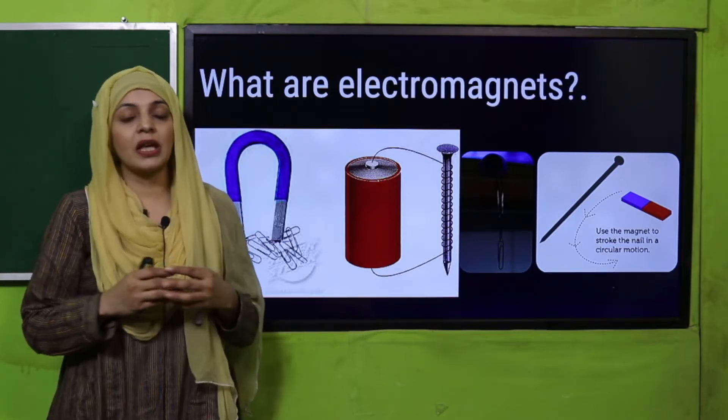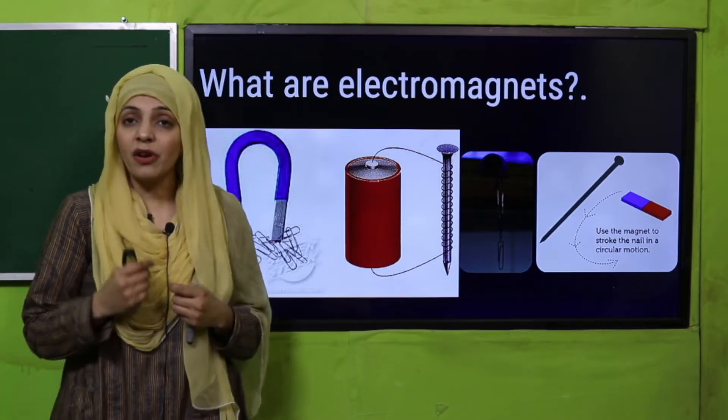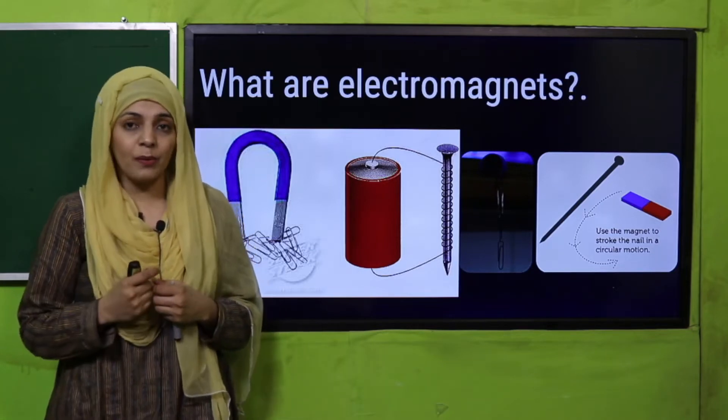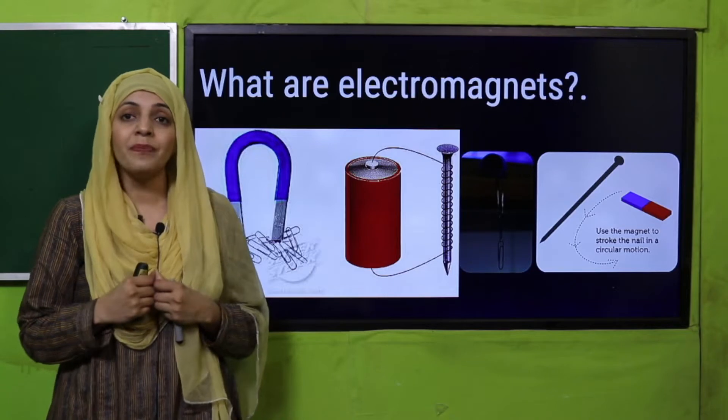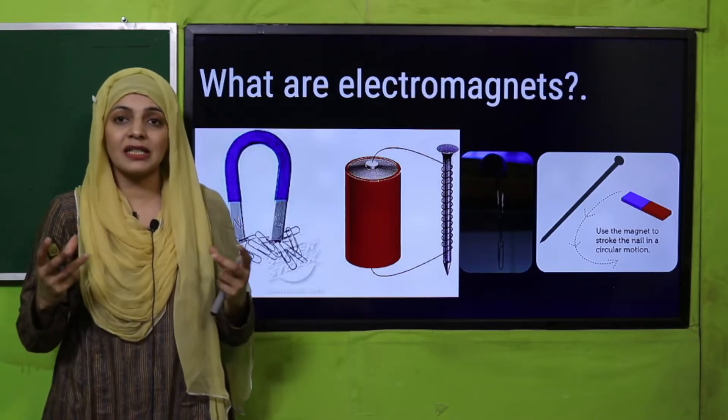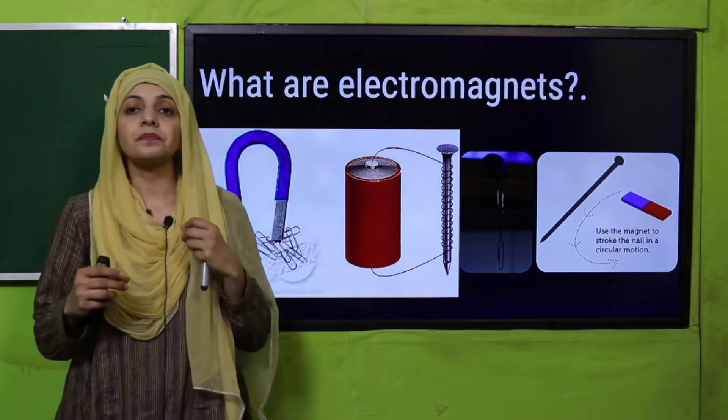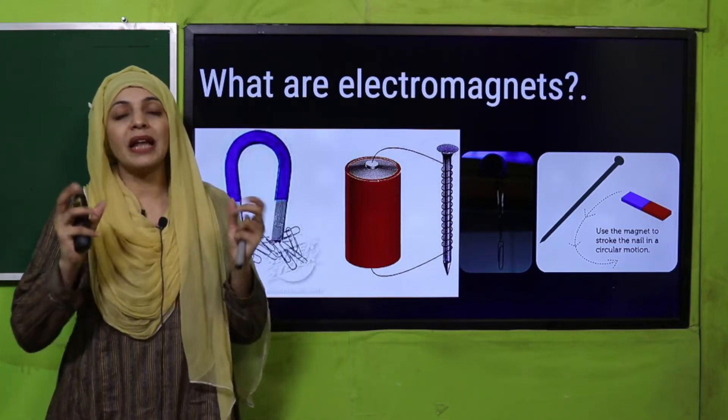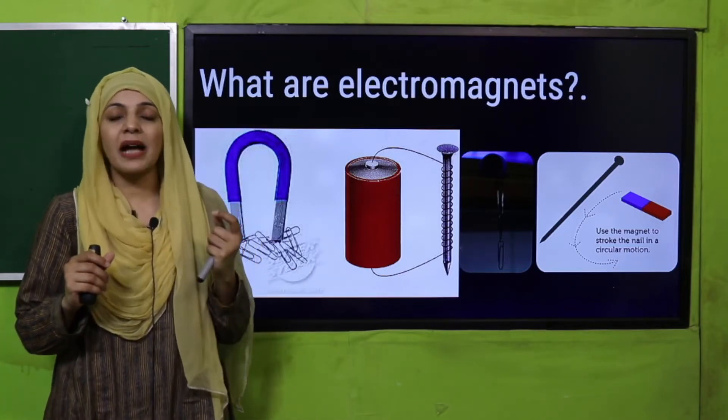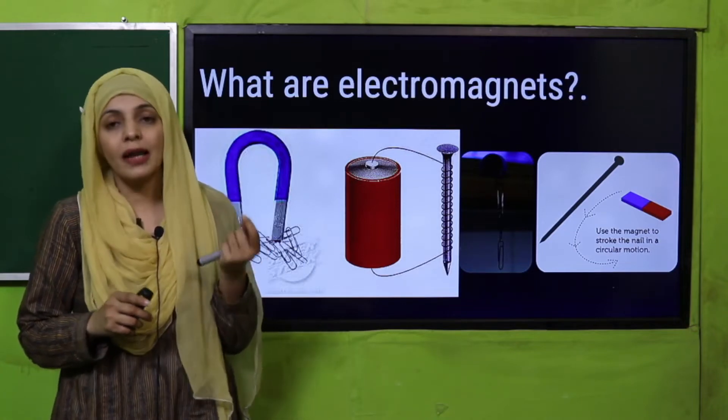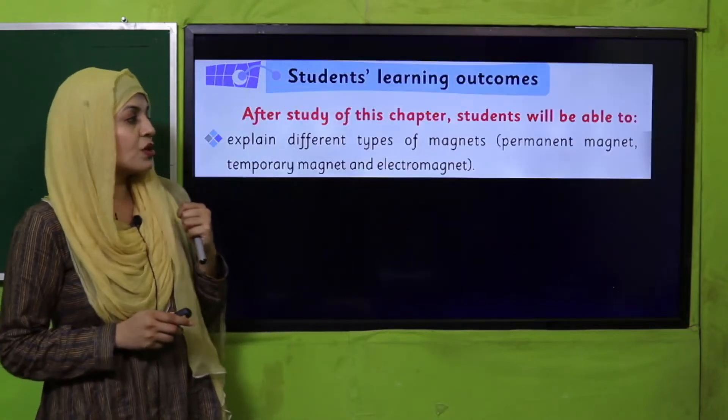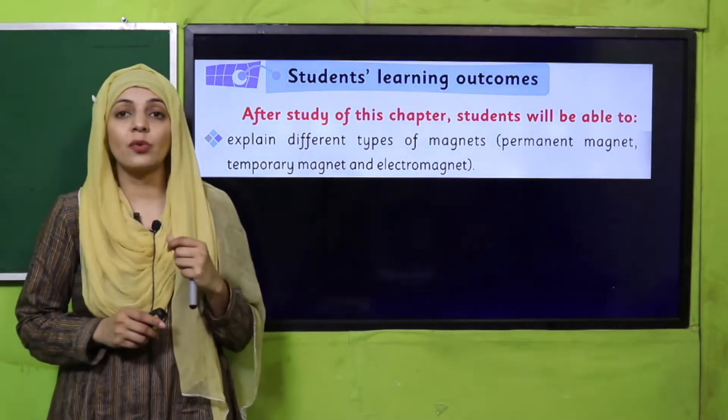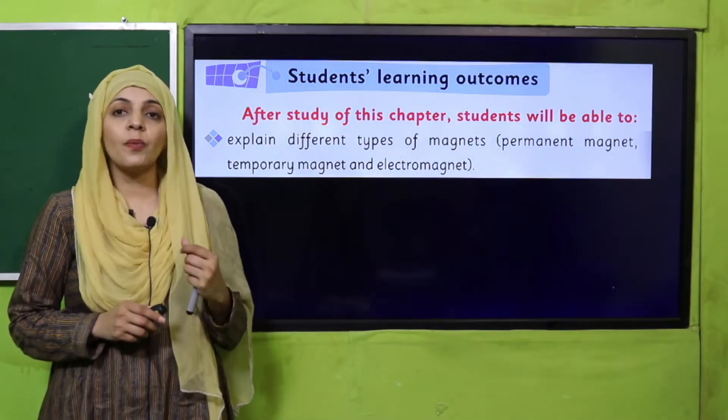In the last lecture we studied types of magnets. There are temporary magnets, permanent magnets, and temporary magnets include electromagnets, which produce magnetism due to electric fields. When electricity produces magnetism, these are called electromagnets. So in today's lecture, we will learn how to make electromagnets.